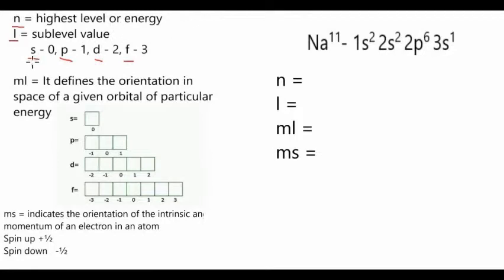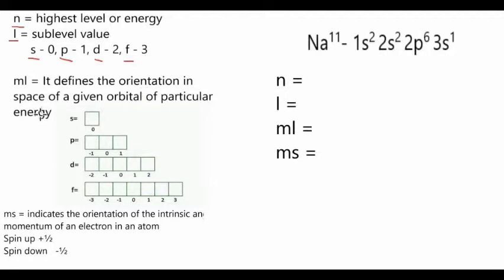For the orbital s or sublevel s, the l value is zero. For p, the l value is one. For d, the l value is two. And for f, the l value is three. For the third quantum number, we have the magnetic quantum number, or ml.